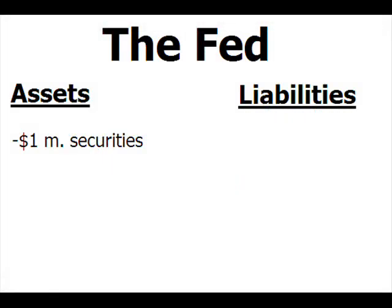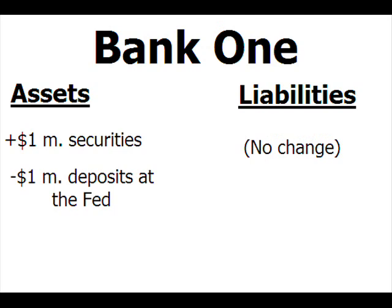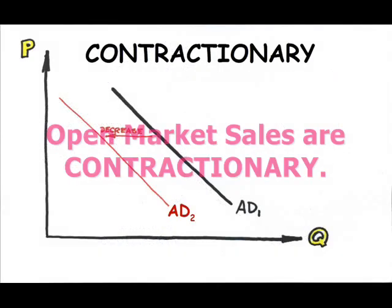What about an open market sale? Let's say the Fed sells $1 million of government securities to Bank 1. The Fed sees a decrease in its holdings of securities, but Bank 1 pays the Fed $1 million. Bank 1 now has $1 million less on deposit at the Fed — that's $1 million less in actual bank reserves — but has $1 million more in securities. This means Bank 1 now has less money to lend, and less money in circulation means less spending, slowing down the economy. Therefore, an open market sale is contractionary monetary policy.